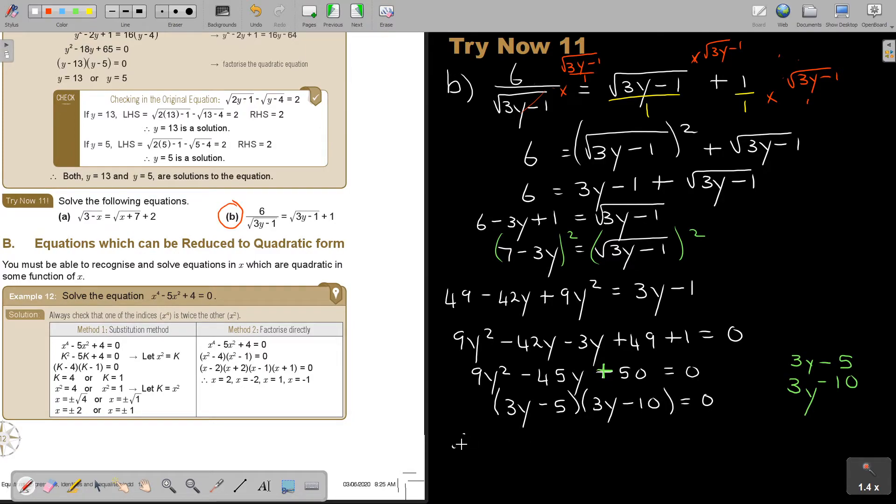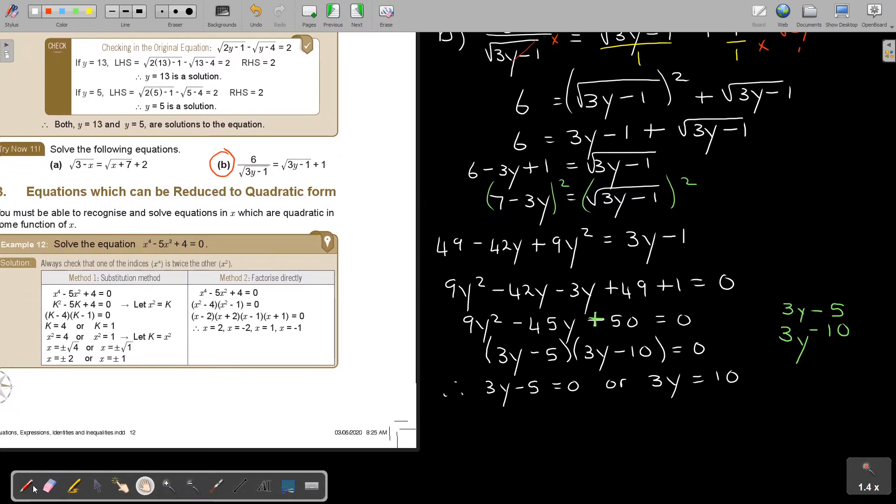So I get that 3Y minus 5 equals 0, or 3Y equals 10. I could have already taken it over. It doesn't matter. It's unnecessary. I think I'm going to spare a step there. Because this equals 0, this is 5. So Y is equal to 5 over 3, or Y is equal to 10 over 3. And this can simplify. This is 5 over 3 and this is going to be 10 over 3. That's correct. And now I do my check.